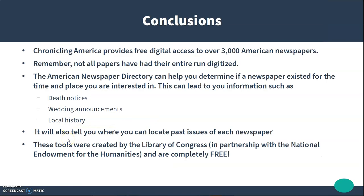In conclusion, Chronicling America provides free digital access to over 3,000 American newspapers — but remember that not all newspapers have had their entire run digitized. The American Newspaper Directory can help you determine if a paper exists for the time and place you're interested in, and that can lead you to information like death notices, wedding announcements, or just some good local history. It will also tell you where you can locate past issues of each newspaper. These tools were created by the Library of Congress in partnership with the National Endowment for the Humanities, and the great news is that they are completely free.